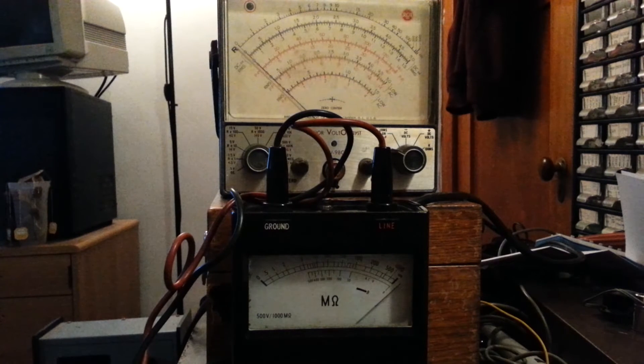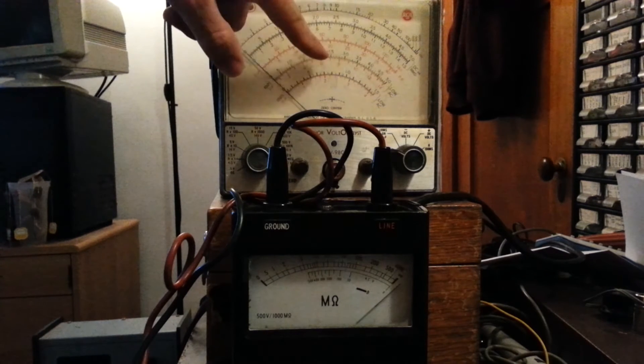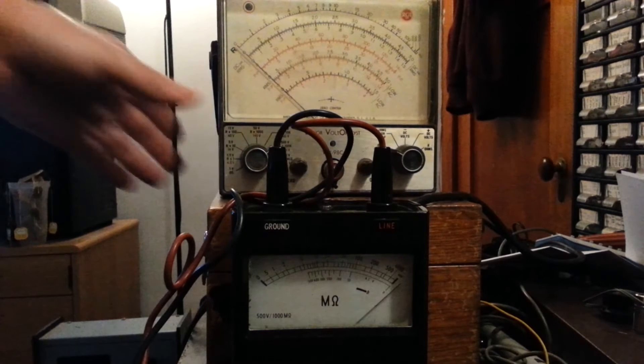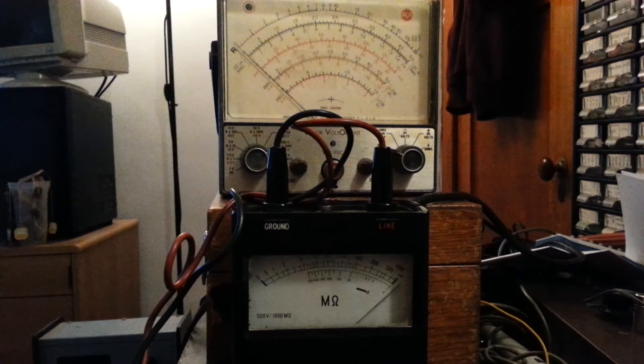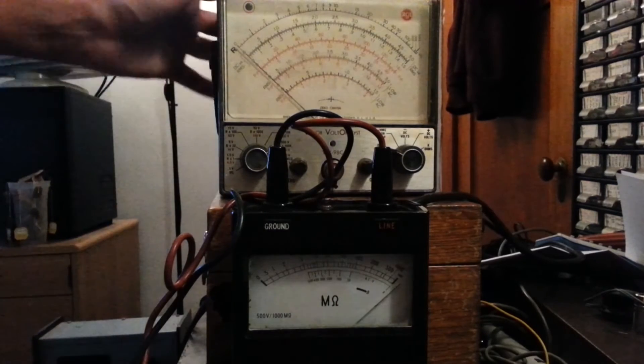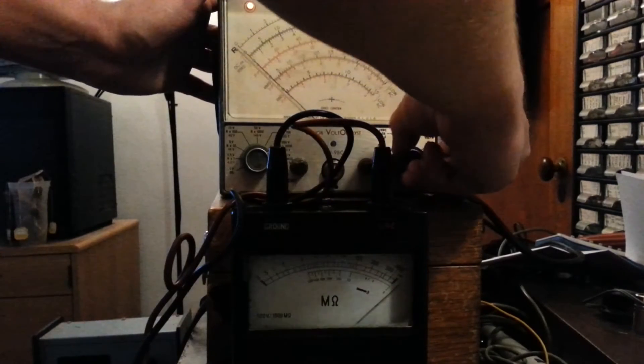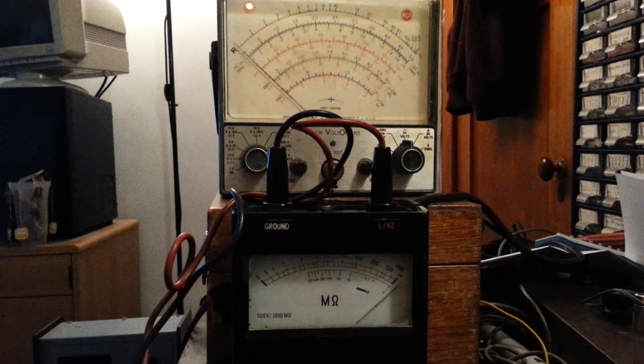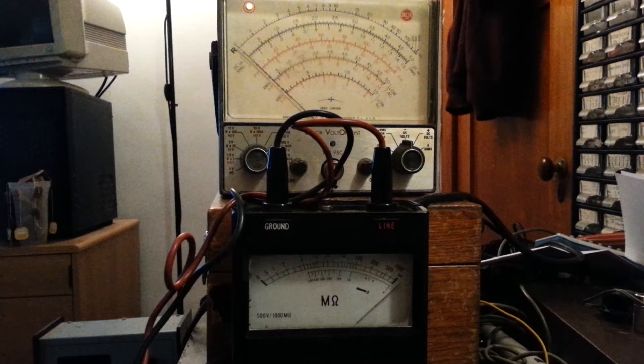So VTVMs are known for being high impedance. That is vacuum tube volt meters. So we're going to be turning this meter on to DC volts. And of course it's going to have to warm up the vacuum tubes.